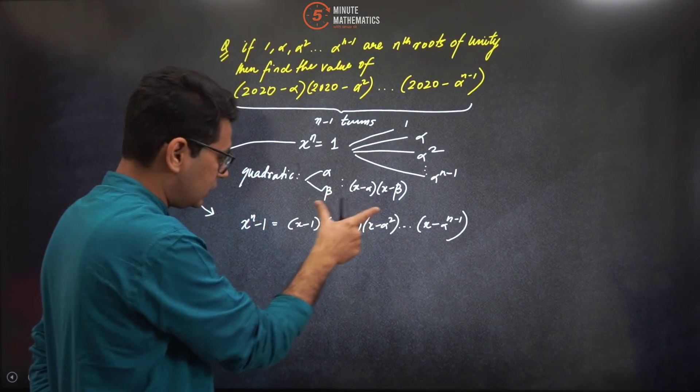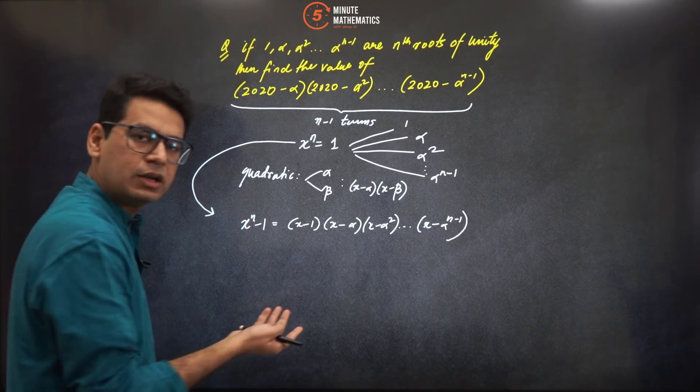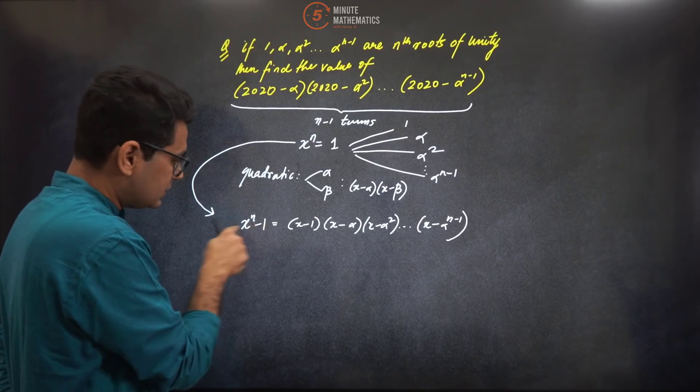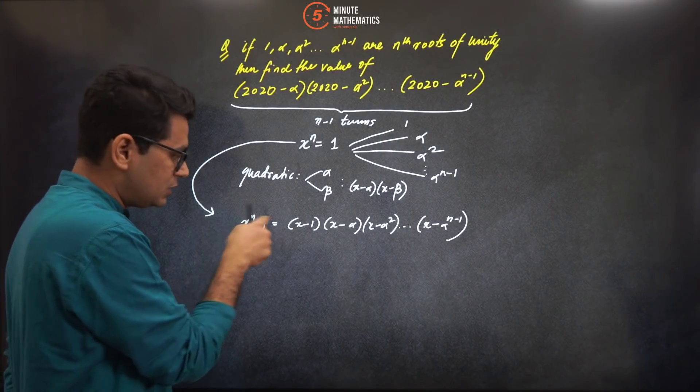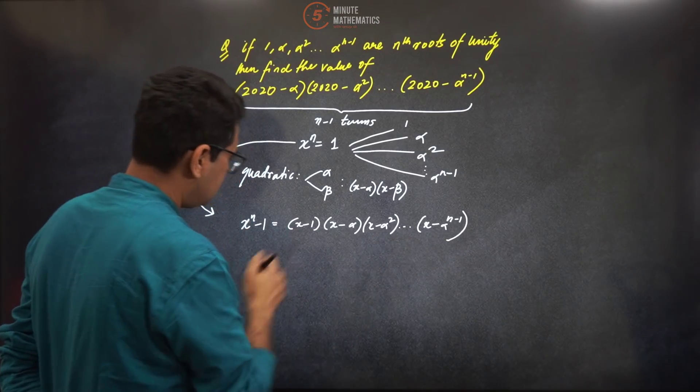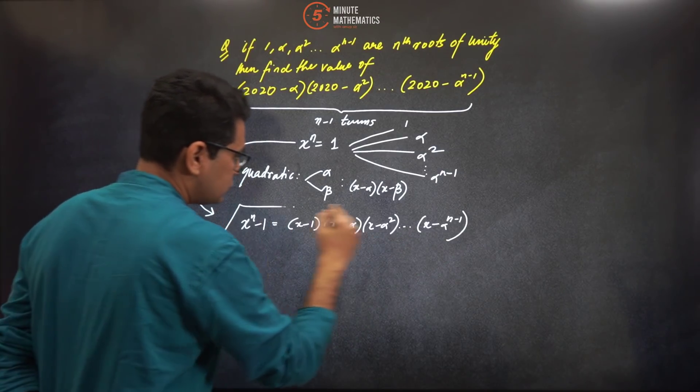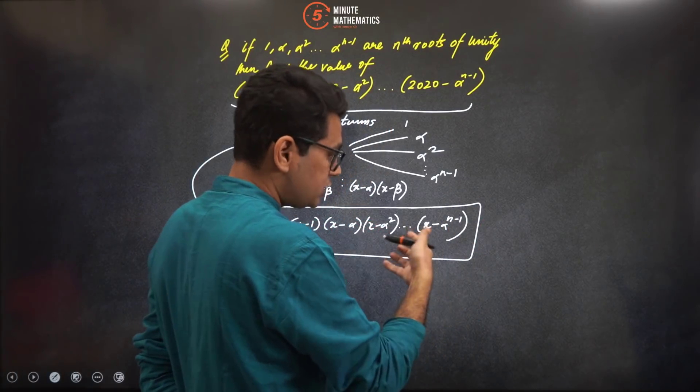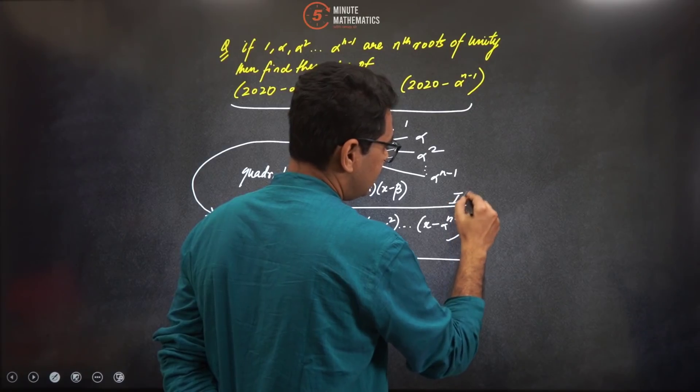Isn't it, guys? Because all of them are the roots. So the same thing that you did for quadratic is actually applicable for any nth degree polynomial. If I know its roots, since the coefficient of x raise to power n is one, here also it will be one.